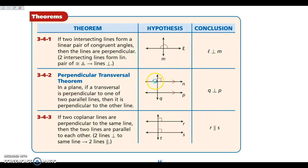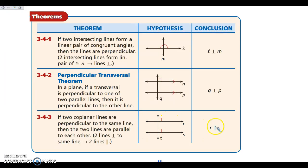Our perpendicular transversal theorem: if I have two parallel lines and a transversal that is perpendicular to one of them, then it has to be perpendicular to the other line as well. If this is 90 degrees, this is a corresponding angle to my 90, so it must also be 90. The corresponding angles postulate tells me these have to be the same measure, so if one is 90 then the other must be 90 as well. And the converse is also true: if we have a transversal that is perpendicular to two lines, then those lines have to be parallel, because the corresponding angles are congruent.